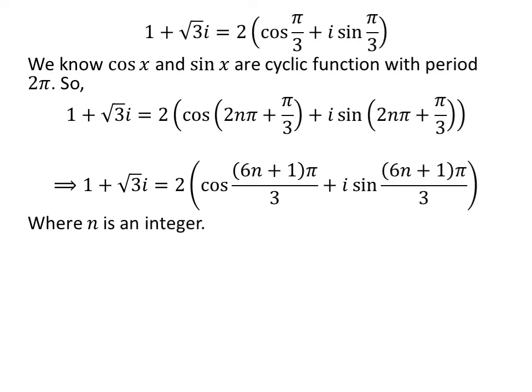Further simplification gives us 1 plus square root of 3 times iota is equal to 2 times cosine of 6n plus 1 times pi upon 3 plus iota times sine of 6n plus 1 times pi upon 3.